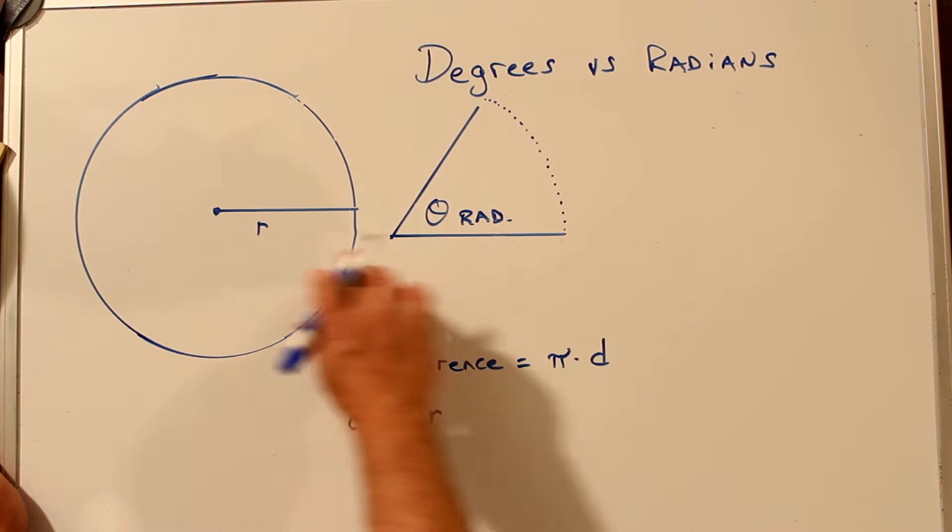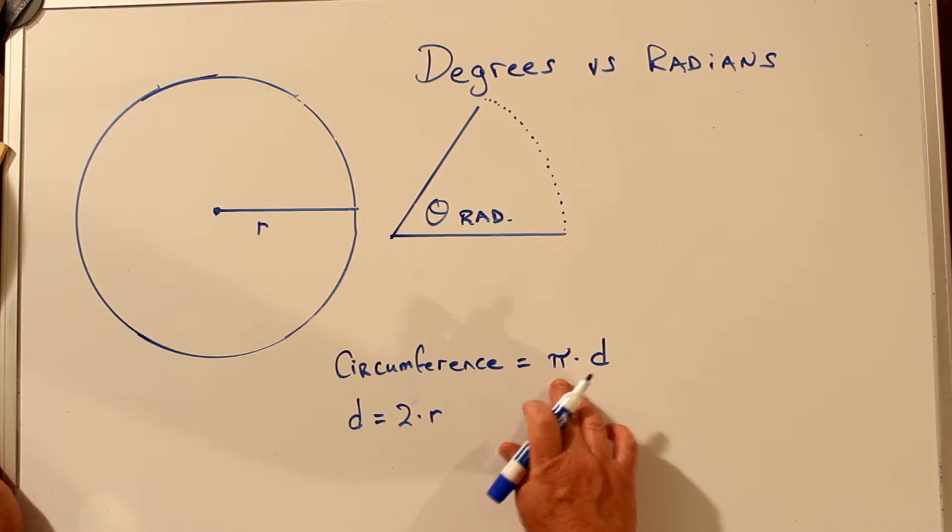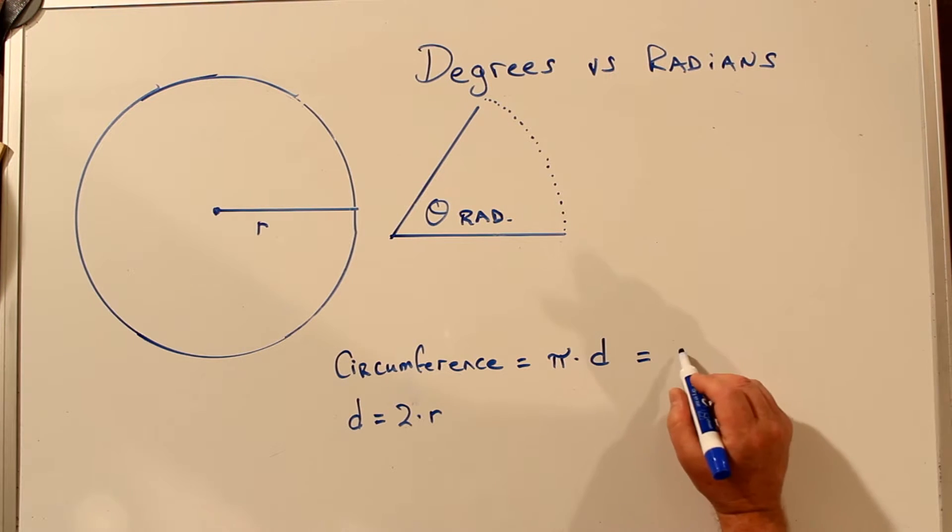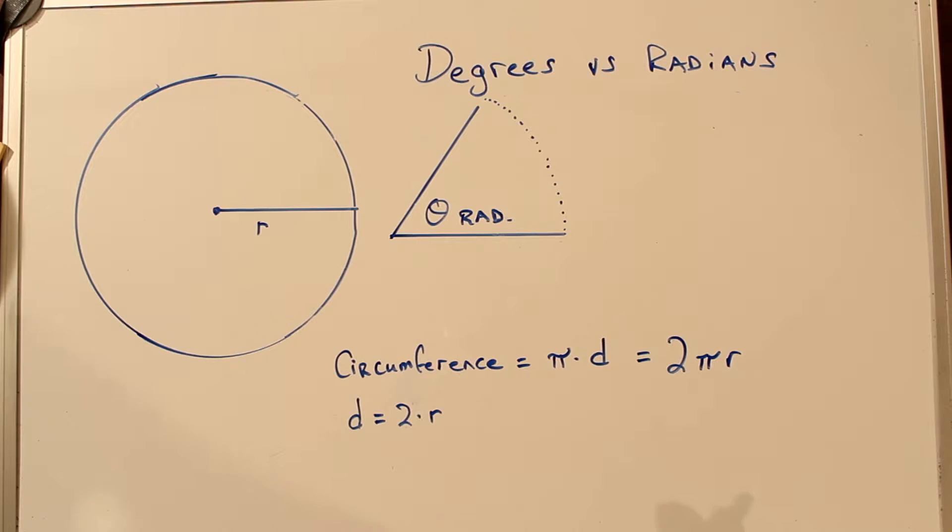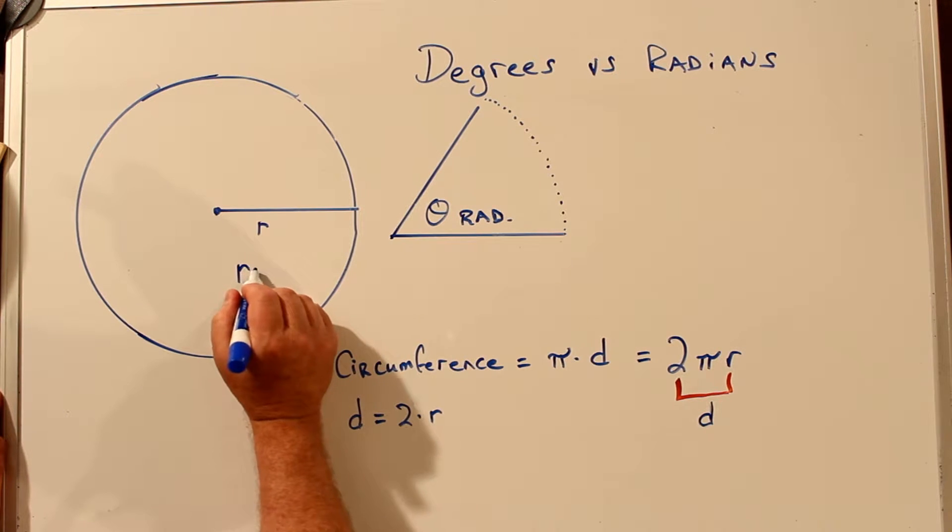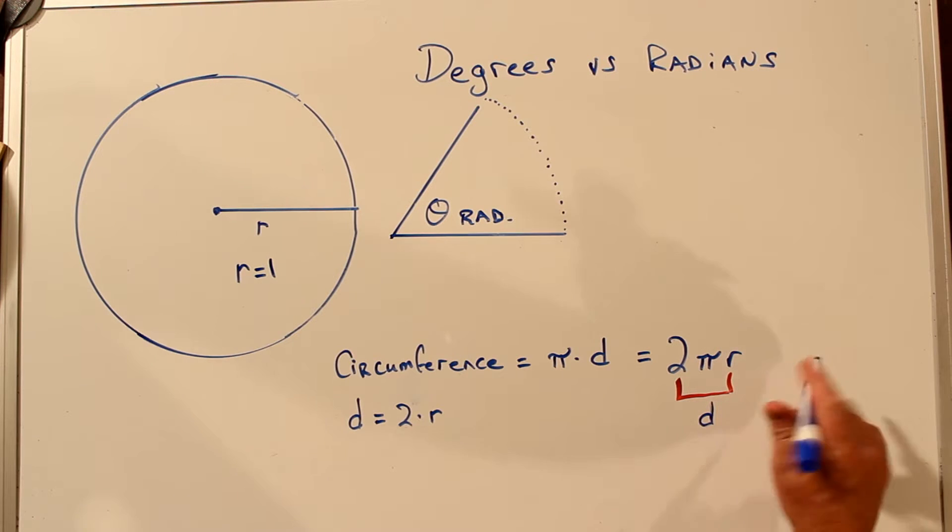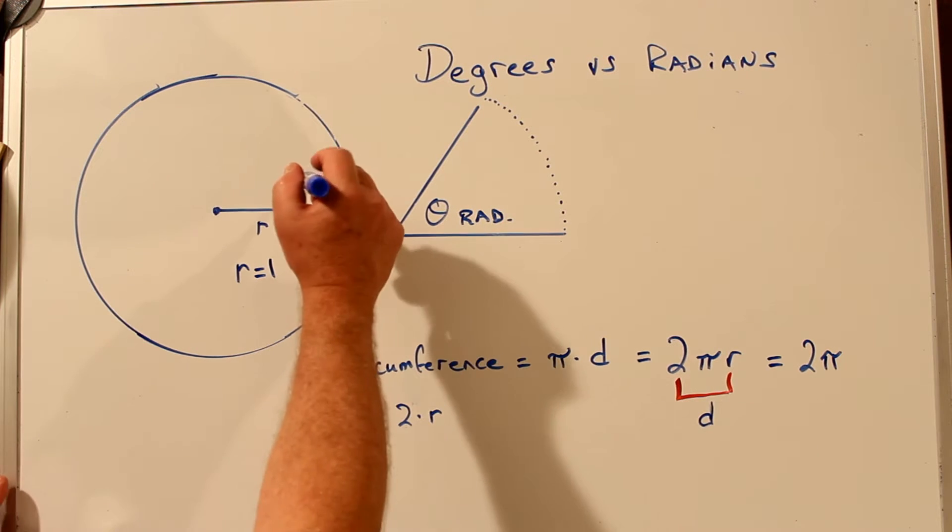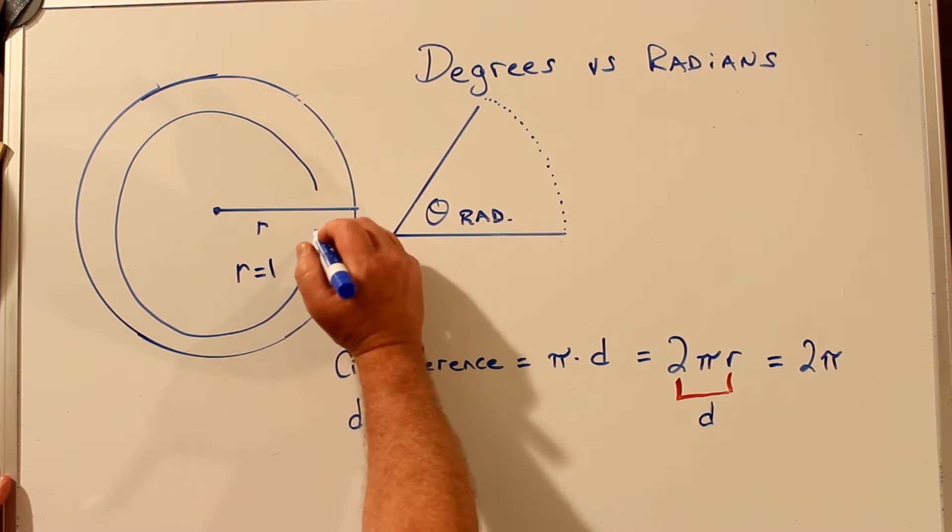Radians are based on the formula for the circumference of a circle, pi times the diameter of the circle, where the diameter equals 2 times the radius. Sometimes the circumference formula is written 2 pi r, where the 2 times the r equals the diameter. But we don't write 2 r pi, we write 2 pi r. So in the case where r equals 1 in the unit circle, our formula would be 2 times pi times 1. So the distance all the way around the circle would be 2 pi.